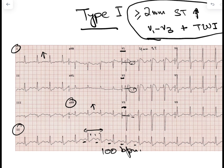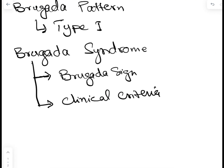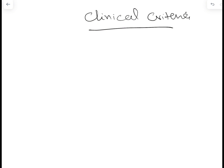This coved ST elevation pattern is the only recognized type of Brugada pattern. If it is accompanied by the clinical criteria, then we will call it Brugada syndrome. However, if no clinical criteria are met, there is no clinical significance to the pattern alone. The previously described type 2 and type 3 patterns are no longer relevant unless they are electrophysiologically stimulated and converted into type 1, and also meet the clinical criteria for Brugada syndrome.